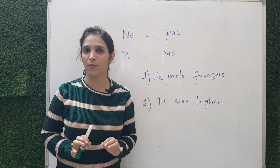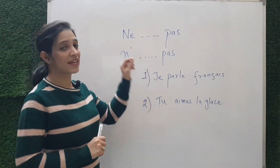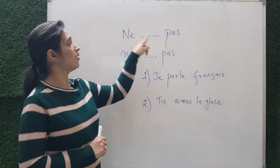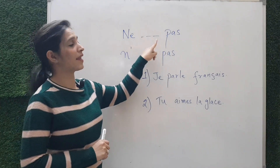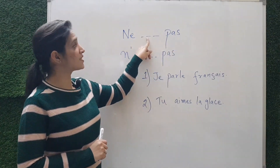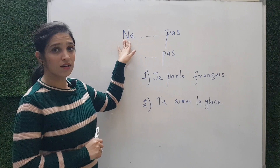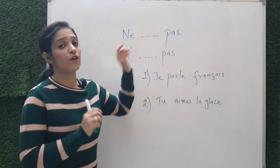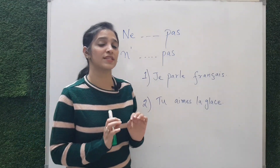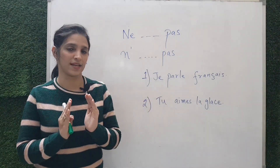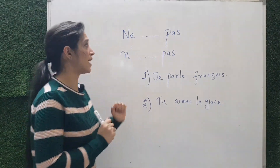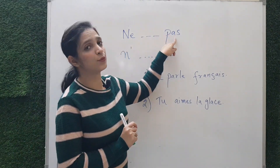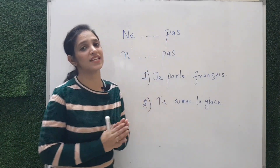Step number one: to make a sentence into its negative form, we need to put 'ne' and 'pas' — ne before the verb and pas after the verb. You have to find the verb in the sentence, and once you find it, put 'ne' before it and 'pas' after it, and the sentence is changed into its negative form.